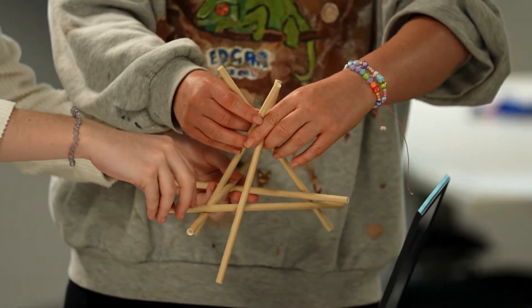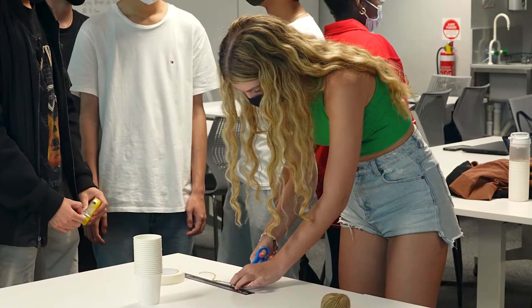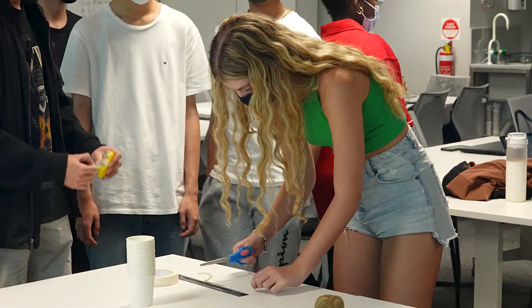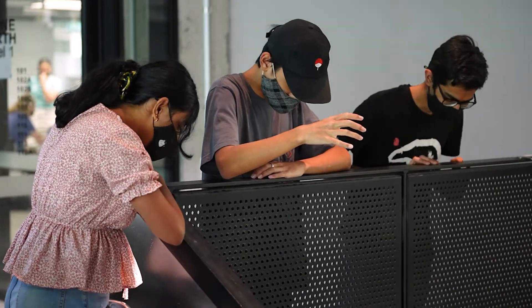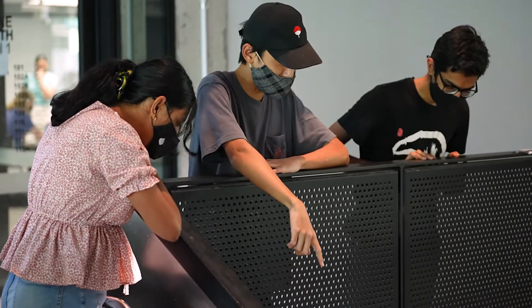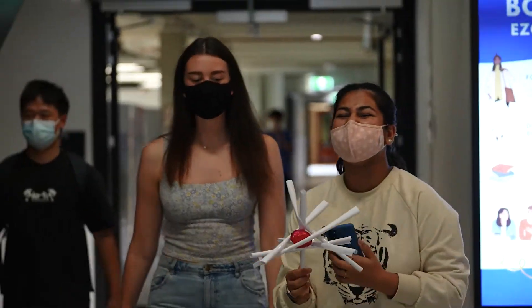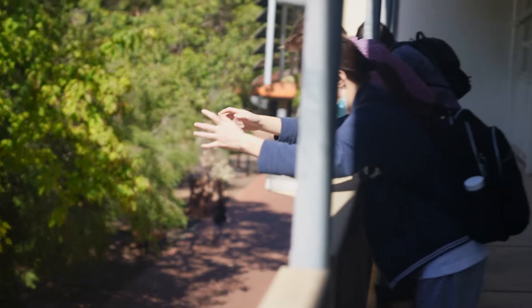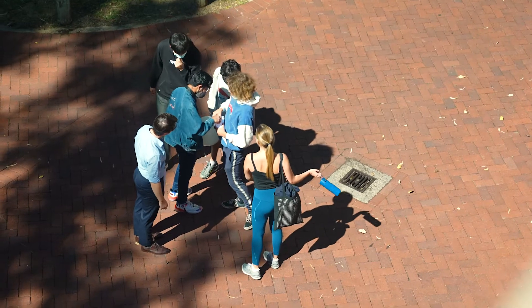What we got them to do was first, last week they got a list of materials — those are your constraints — and they had to brainstorm and think about how they would design something within those constraints. Then they conducted some prototypes and did some testing with Easter eggs last week. This week, with their finalized designs, they'll drop their devices from here and see whether the eggs survive or not.